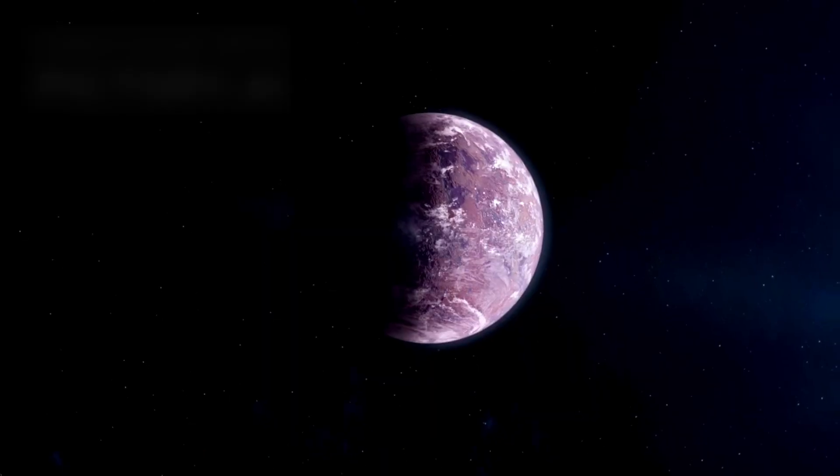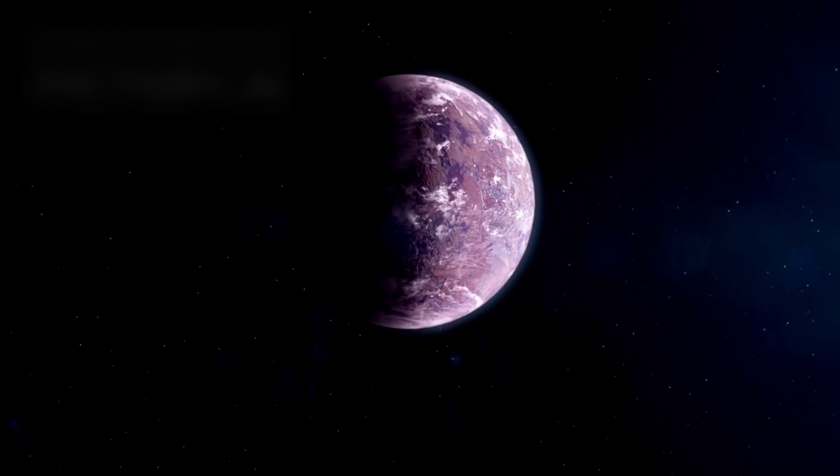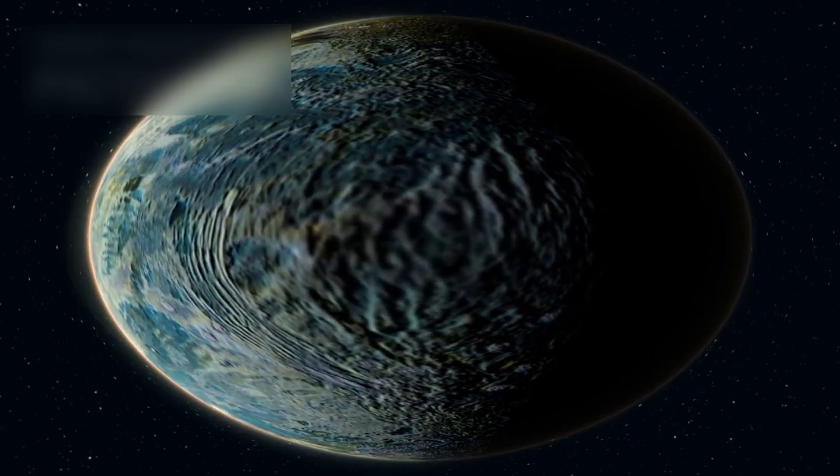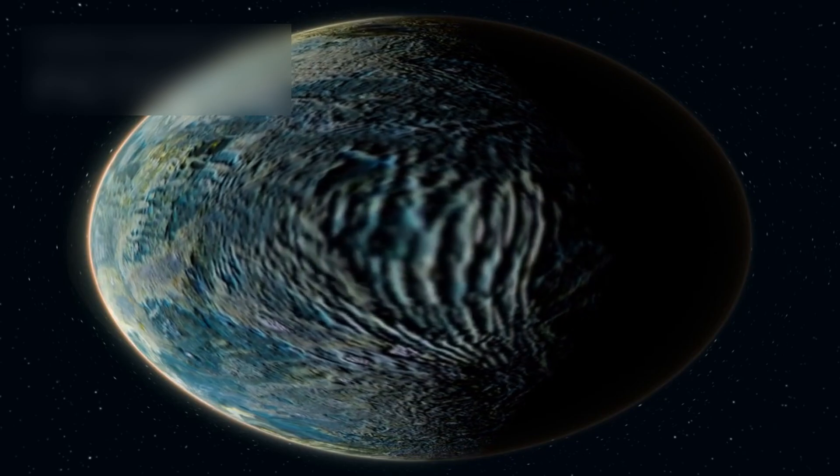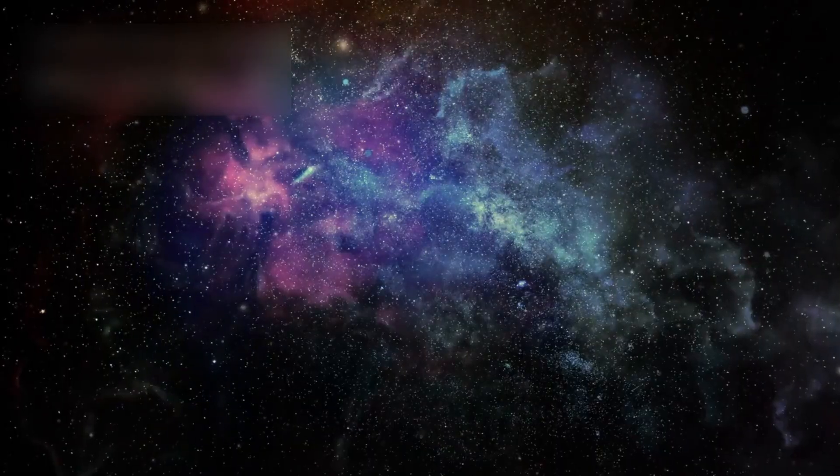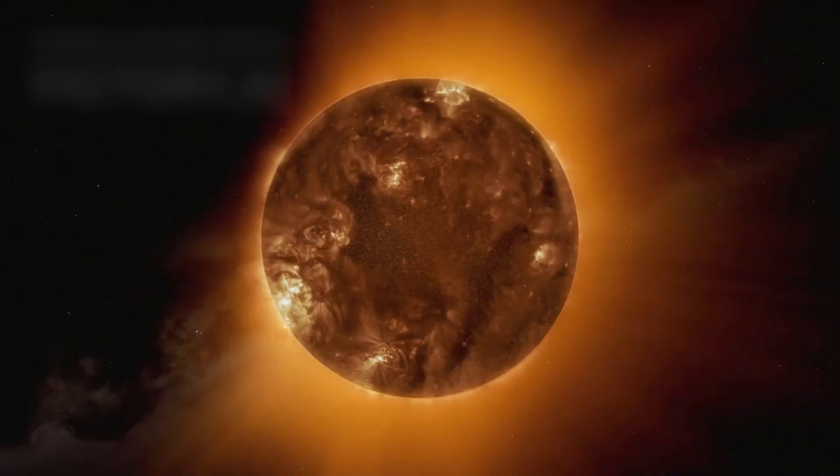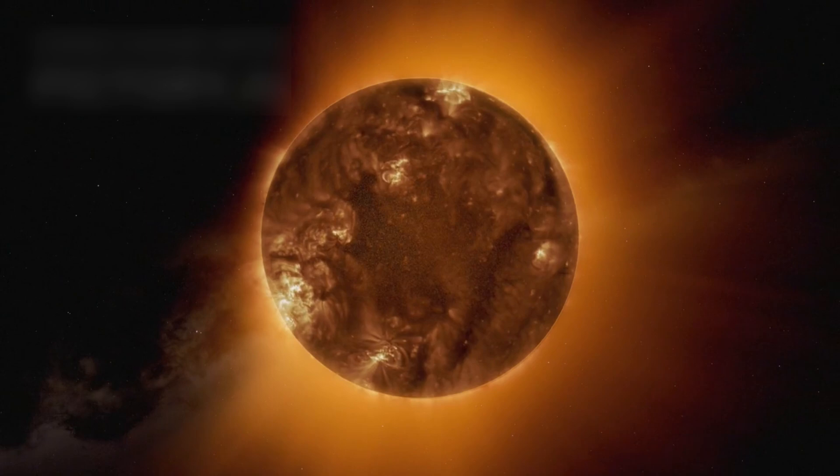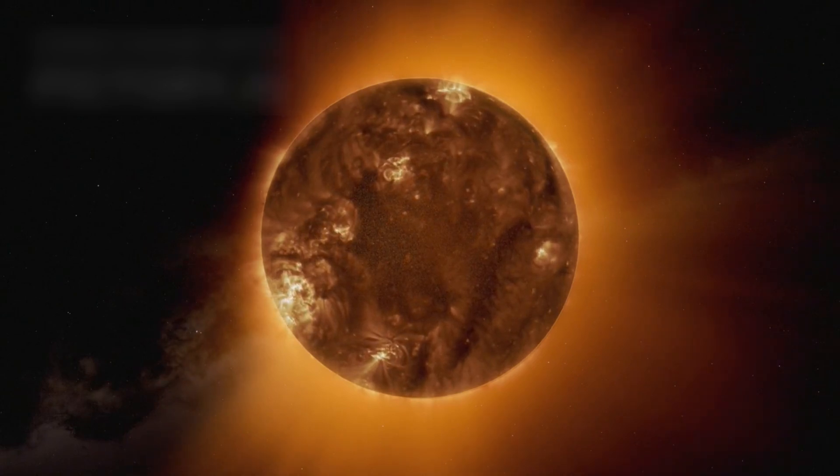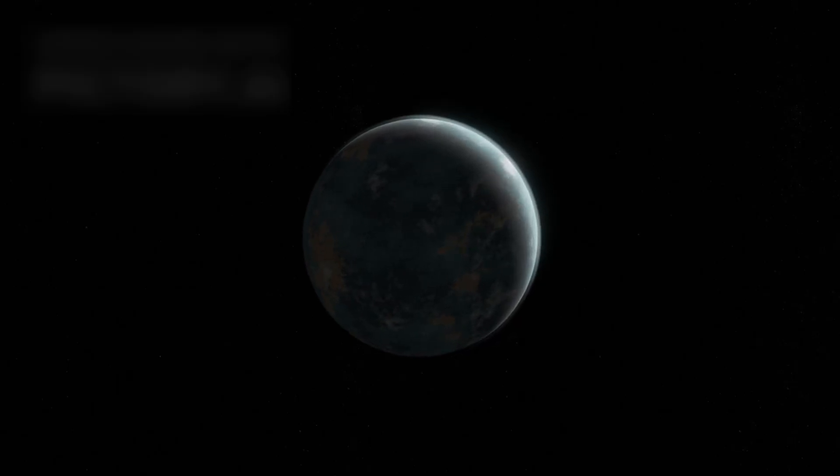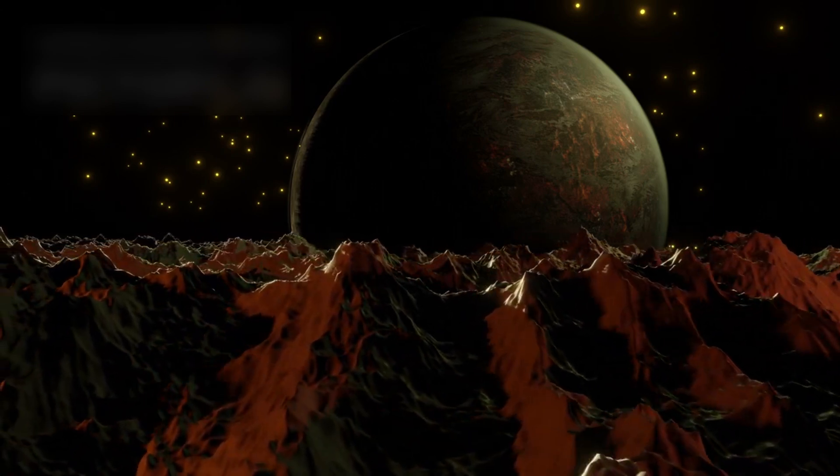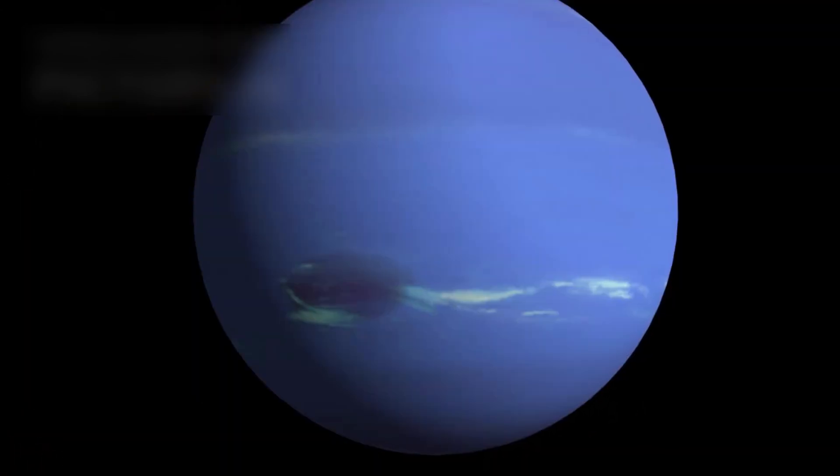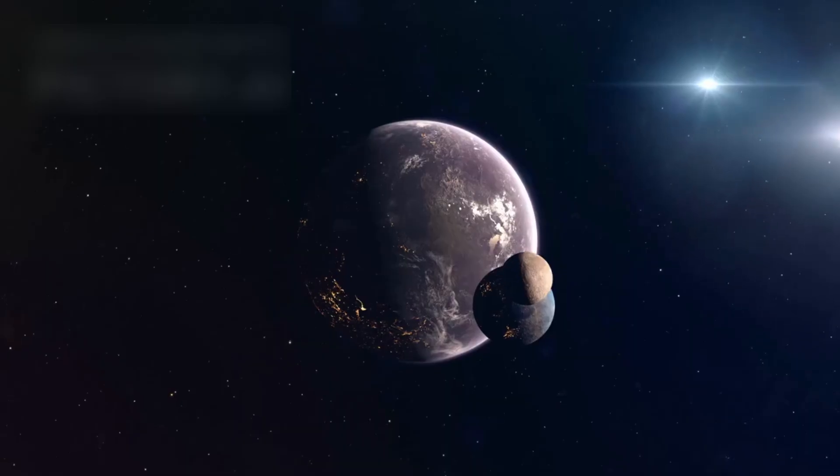Join us as we explore a planet unlike any in our solar system. K2-18 b lies about 120 light years away from us, nestled in the constellation Leo, circling a cool red dwarf star known simply as K2-18. It belongs to a mysterious class of worlds larger than Earth yet smaller than Neptune—we call them sub-Neptunes, planets without a true counterpart in our own celestial neighborhood.